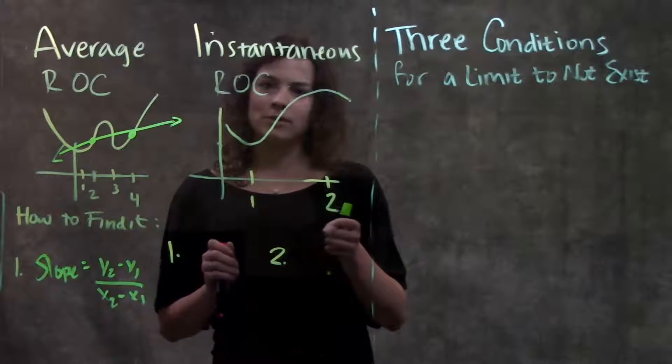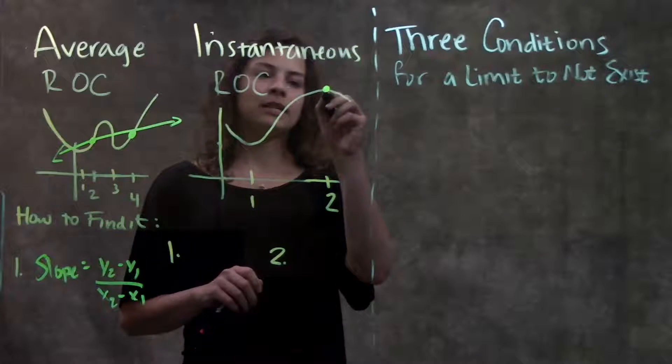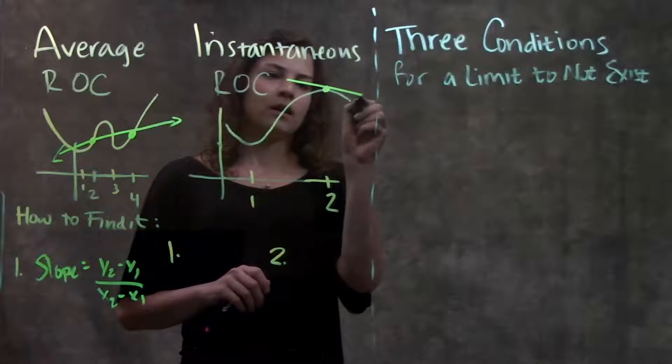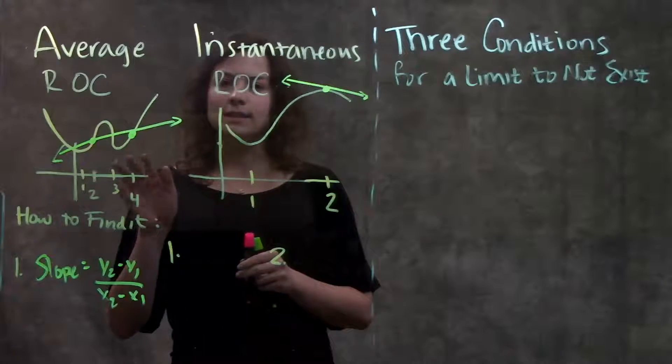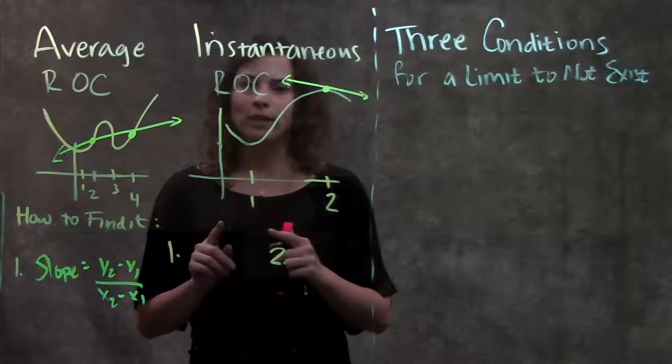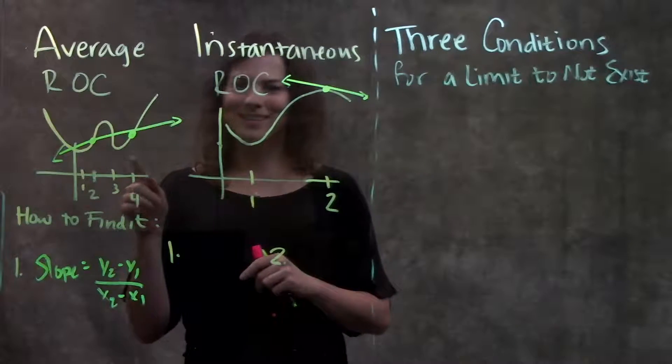For instantaneous rate of change, what if we're interested in what is the rate of change exactly at the point x equals 2? What's the slope of that line there? This line here is called the secant line. It touches the graph at two points, not just the first time, but also a secant time.